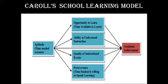Time needed to learn is given into four different elements. The output of that is the academic achievement — how much a learner has achieved academically. The four elements are: opportunity to learn, ability to understand instructions, quality of instructional events, and perseverance — the time the student is willing to spend for learning.